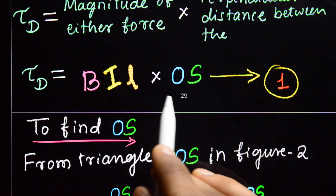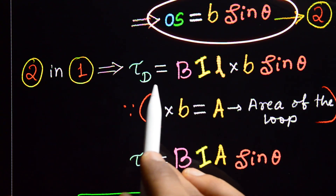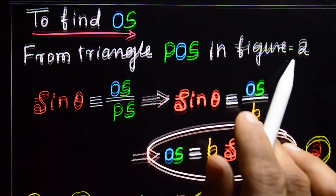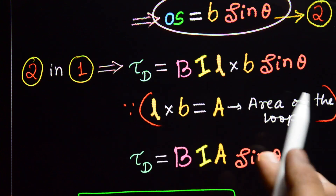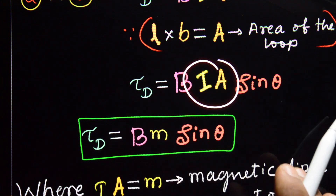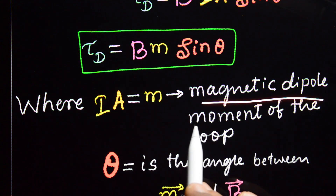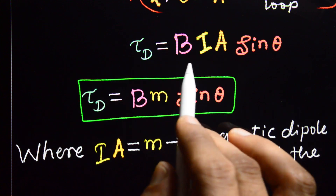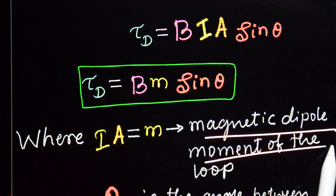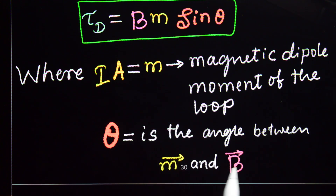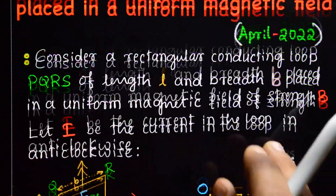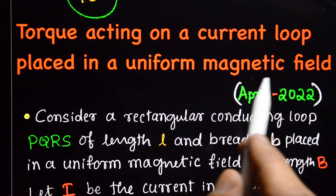Substituting OS = b sin(theta) into the first equation: deflecting torque τ = Bil × b sin(theta) = BiA sin(theta), where A = l × b is the area of the loop. Now i × A equals M, the magnetic dipole moment of the loop. Therefore torque τ = BM sin(theta), where B is the magnetic field, M is the magnetic dipole moment, and theta is the angle between B and M.